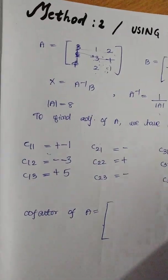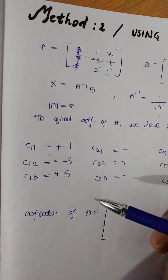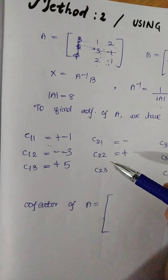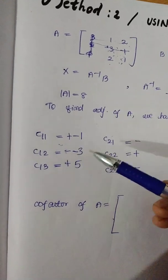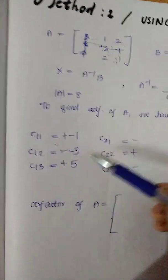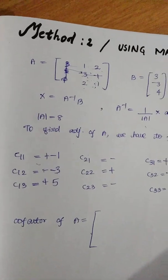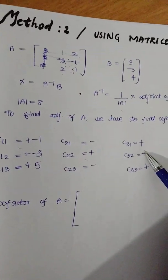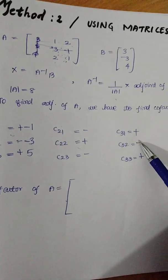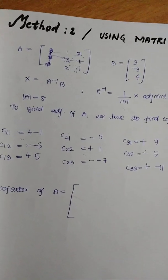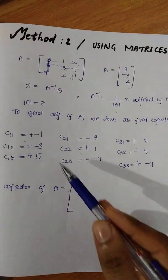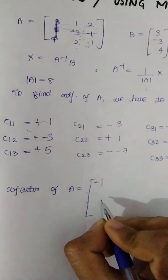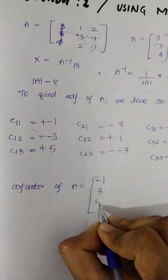Let's do this again. Let's put this plus and minus symbol, put it in the cofactor. The cofactor of all elements: c1,1 is minus 1, c1,2 is minus 3, c1,3 is 5. Also c3,1 is 7.